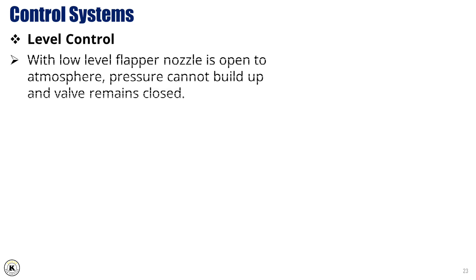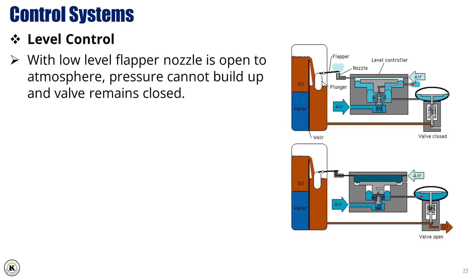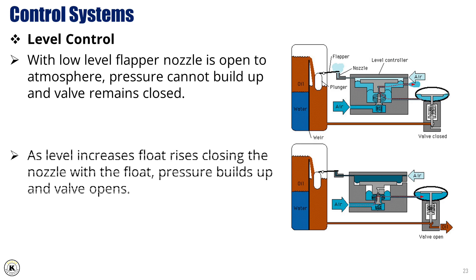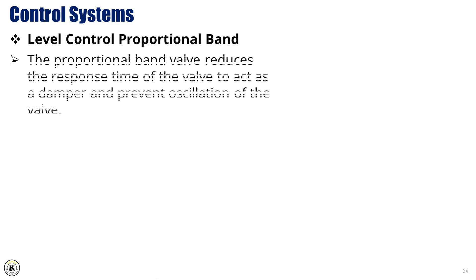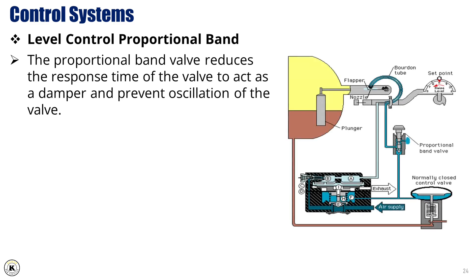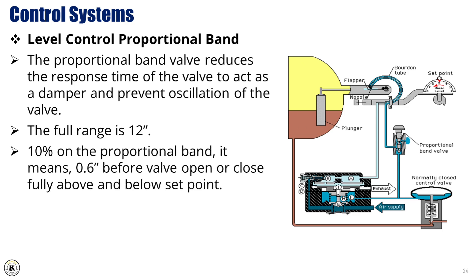With low level, the flapper nozzle is open to atmosphere; pressure cannot build up and the valve remains closed. As level increases, the float rises, closing the nozzle. Pressure builds up and the valve opens. The level control proportional band valve reduces the response time of the valve to act as a damper and prevent oscillation. The full range is 12 inches; 10% on the proportional band means 0.6 inches before the valve opens or closes fully above and below the set point.